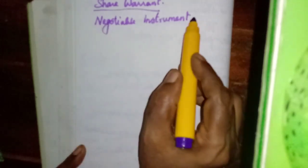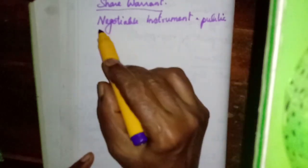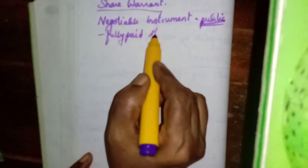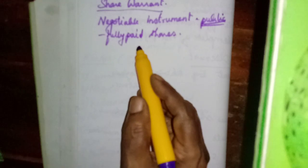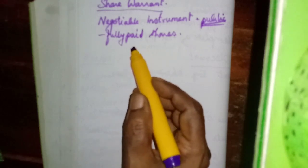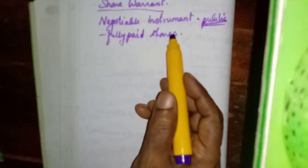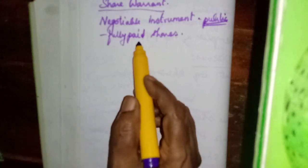The share warrant is issued only by the public limited company. But the share certificate is issued by both public and private companies. The share warrant is issued only against fully paid shares. The share certificate is issued once the directors make the allotment, even when shares are not fully paid. But share warrant is issued only for fully paid shares.